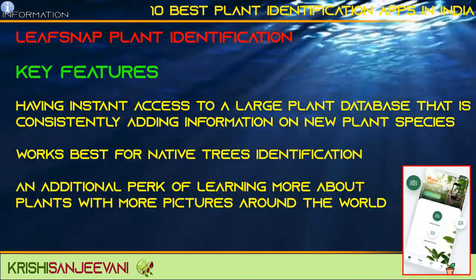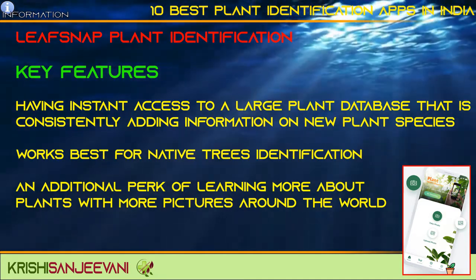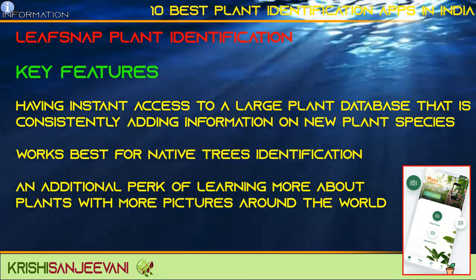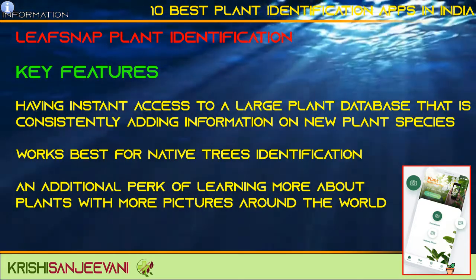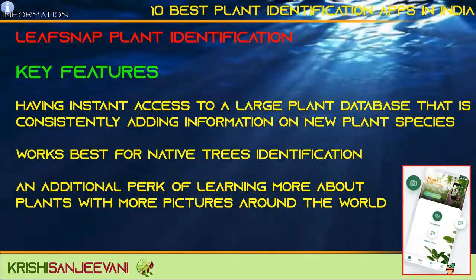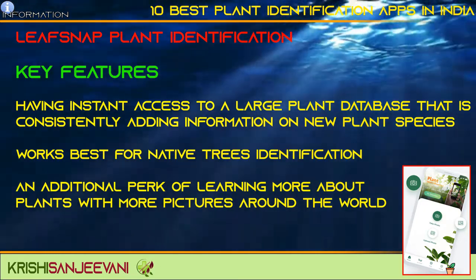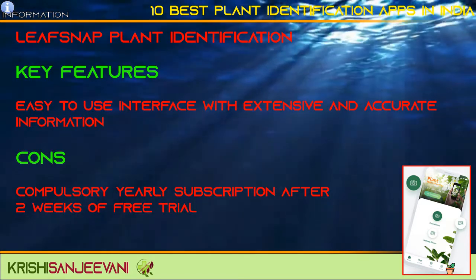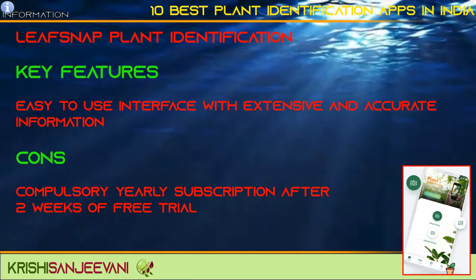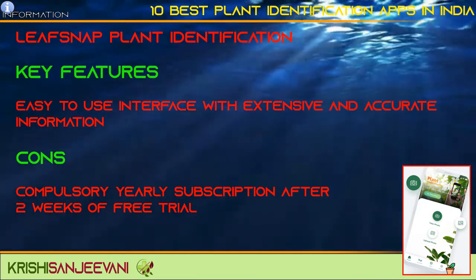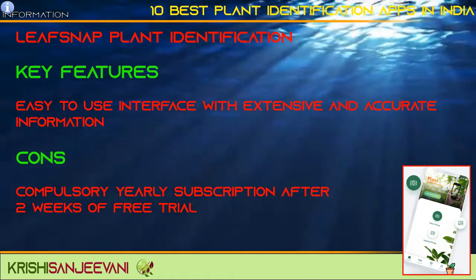Leaf Snap plant identification. Key features: instant access to a large plant database that consistently adds information on new plant species; works best for native tree identification; an additional perk of learning more about plants with pictures from around the world; easy-to-use interface with extensive and accurate information. Cons: Compulsory yearly subscription after two weeks of free trial.